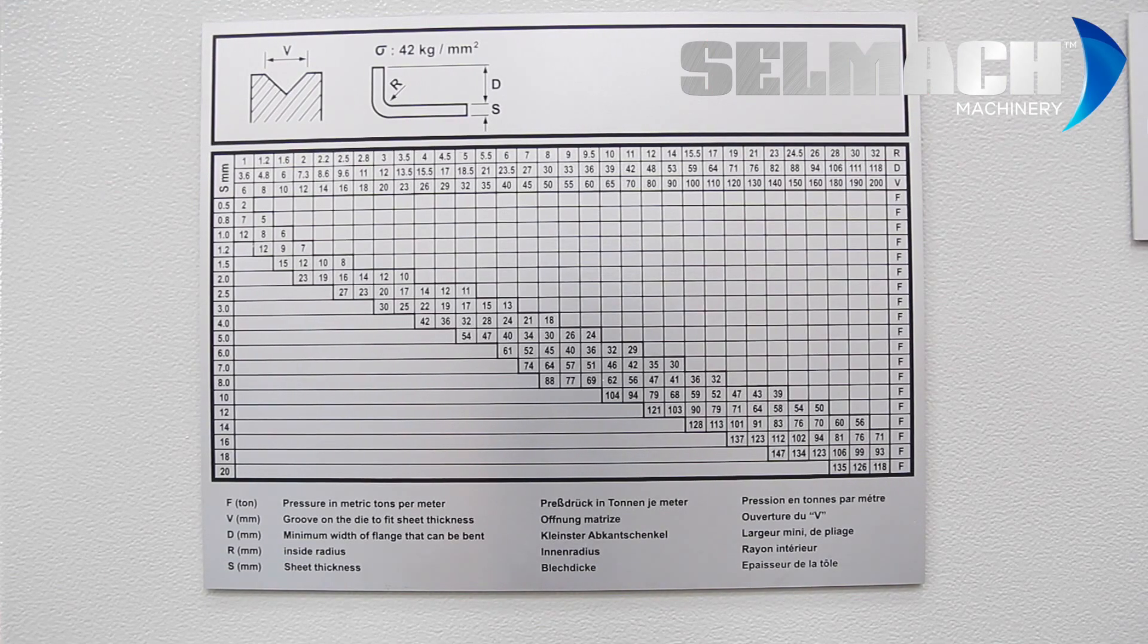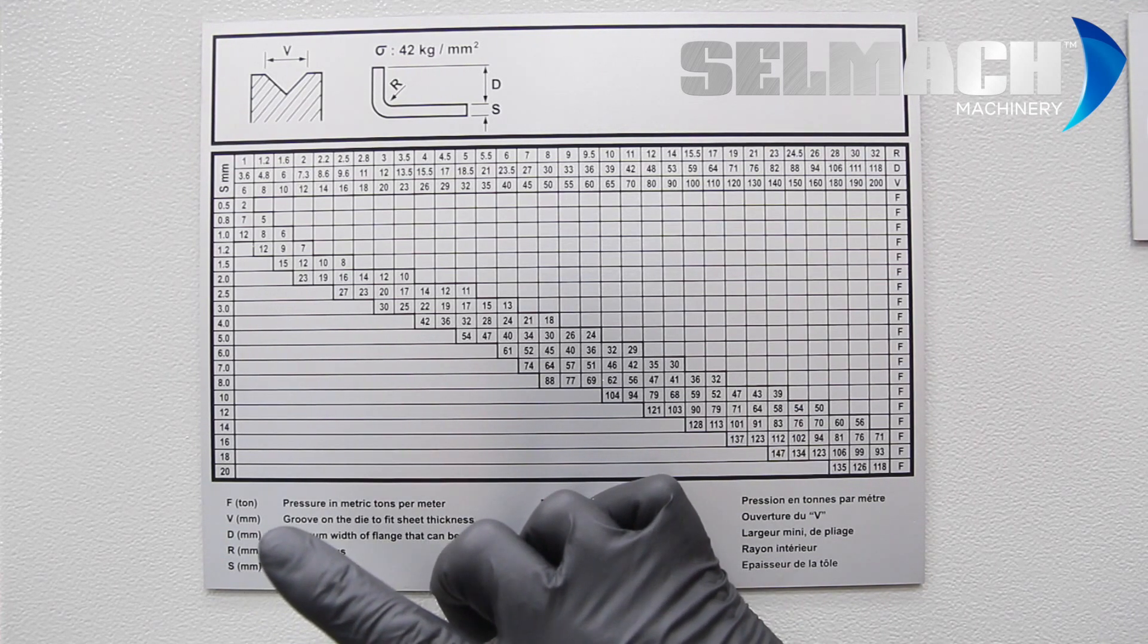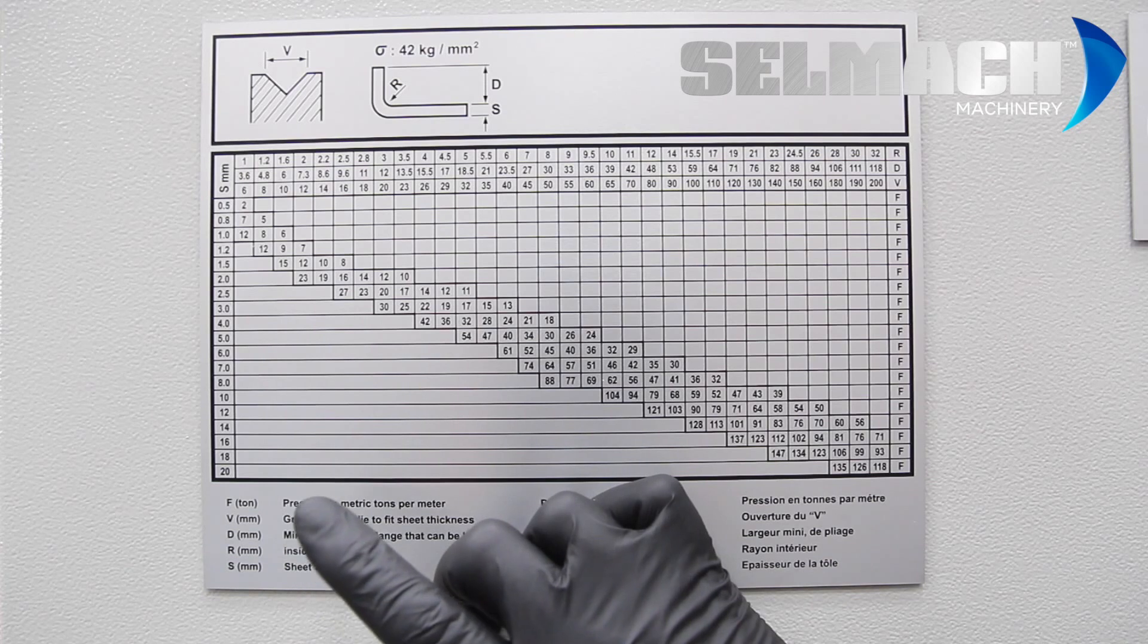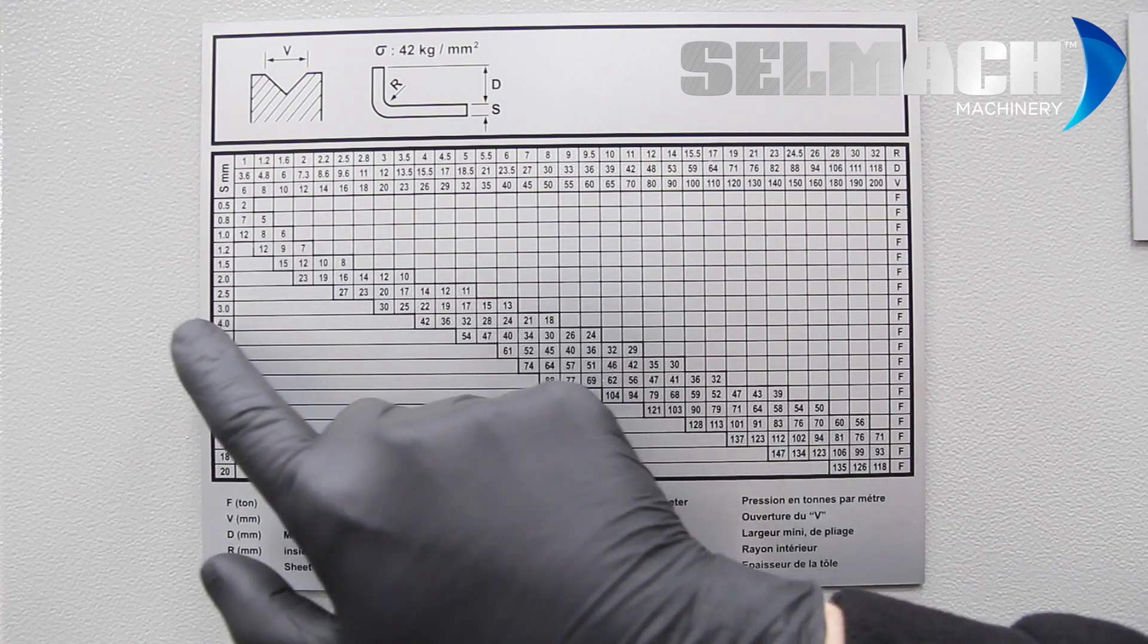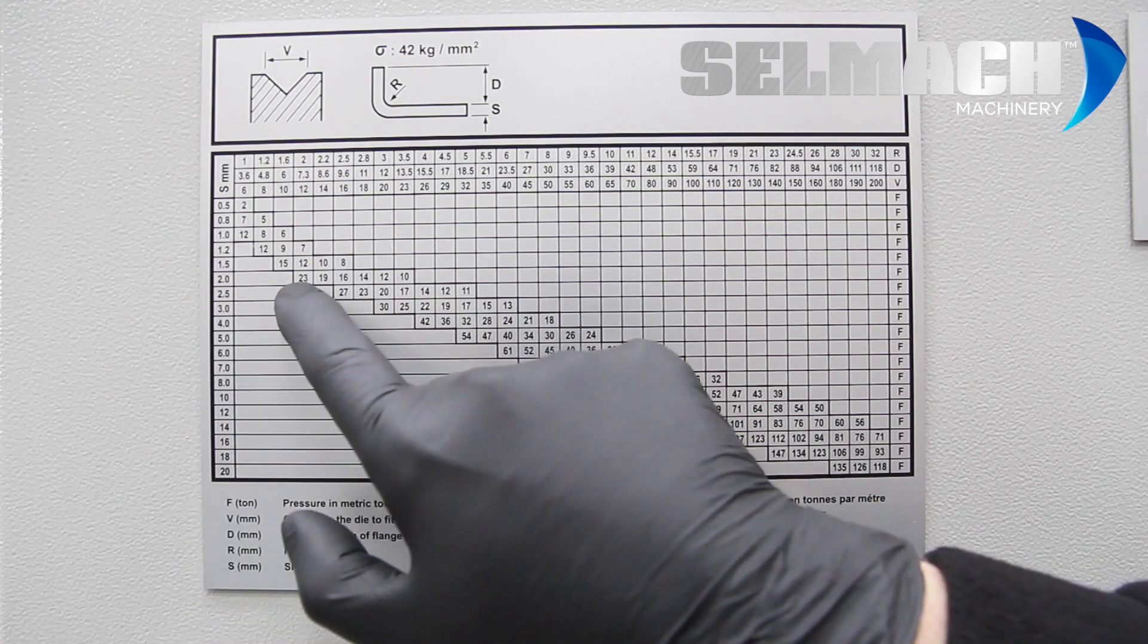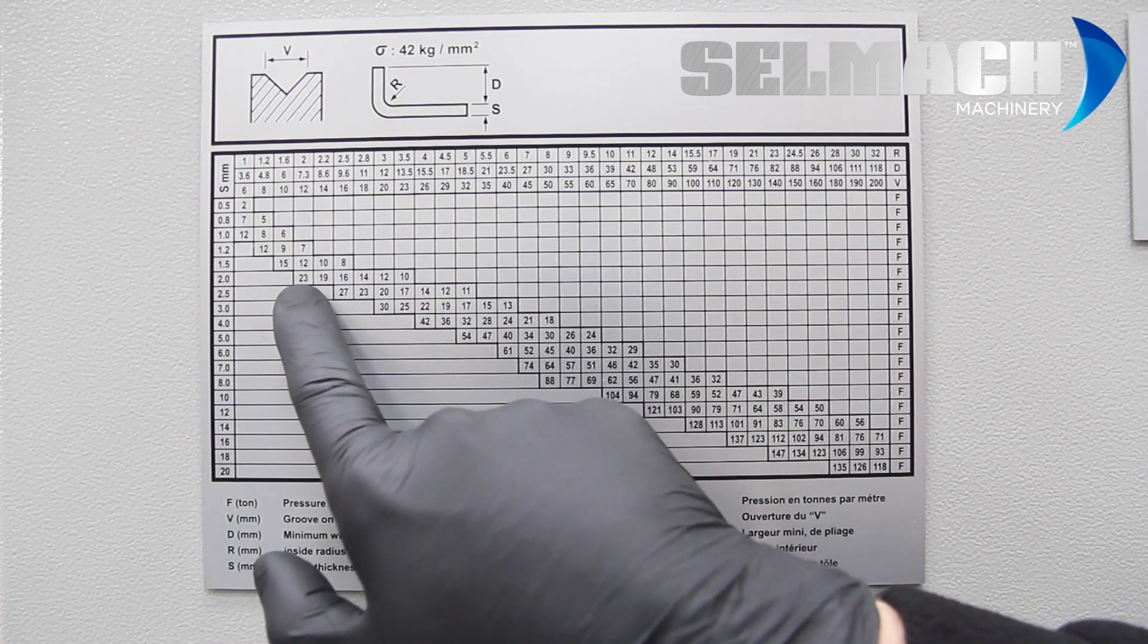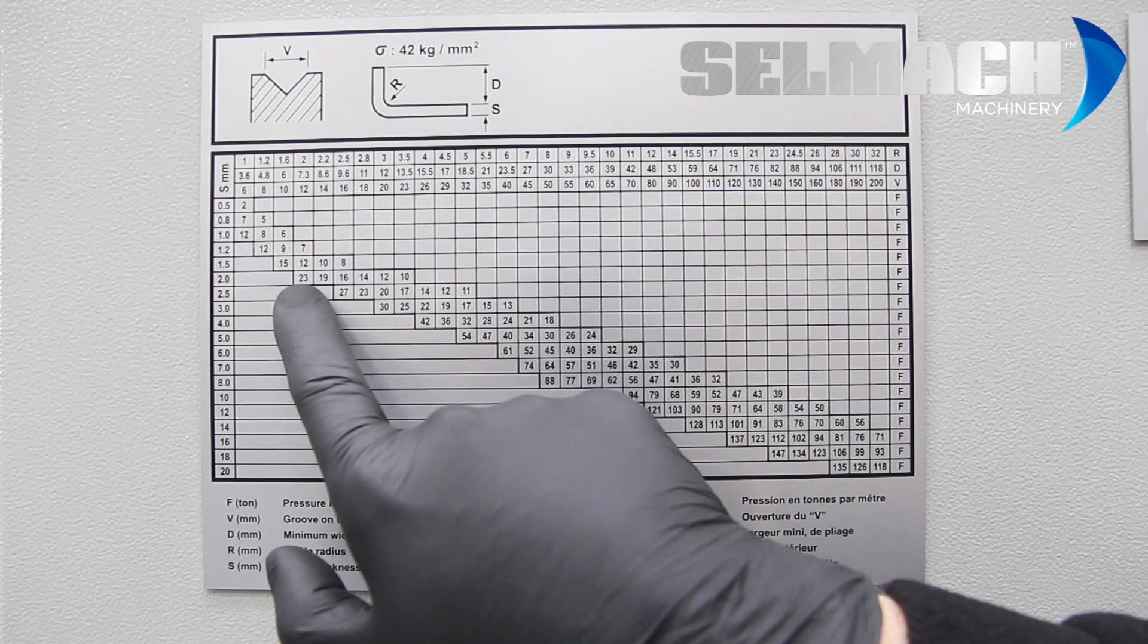We'll try several examples. Let's say we're folding some 2mm and we times it by 6. This means we need a 12mm V. So if you look at the 2 and you look at the 12 and you bring them together at the joining point, it's telling you that you need 23 tons per linear meter.